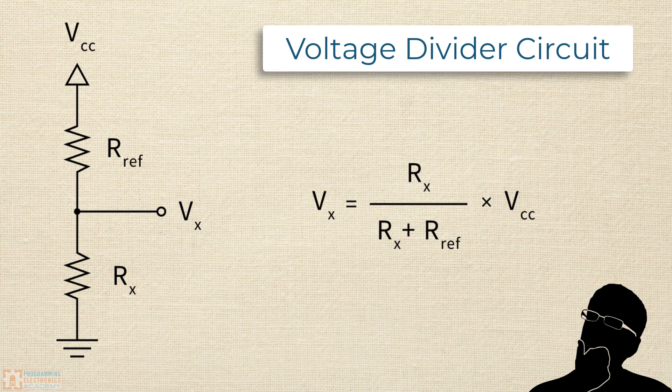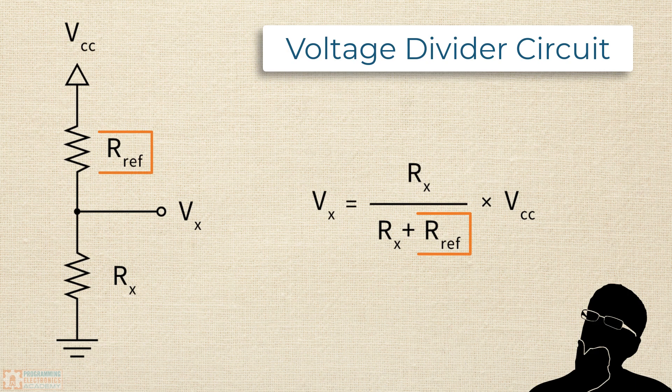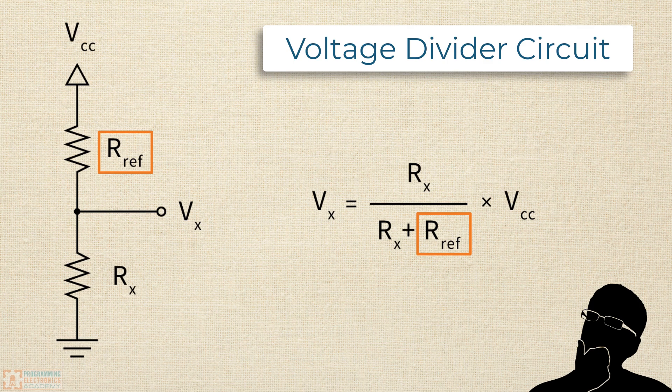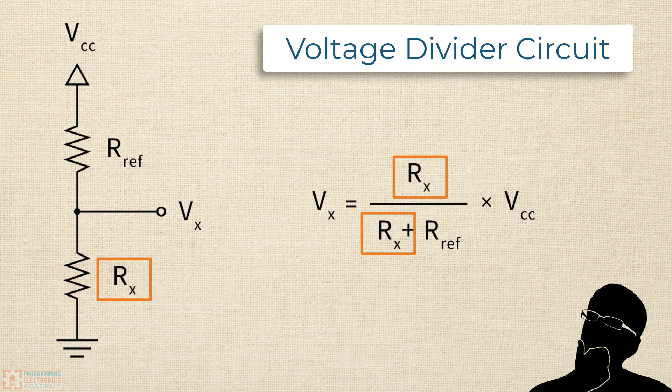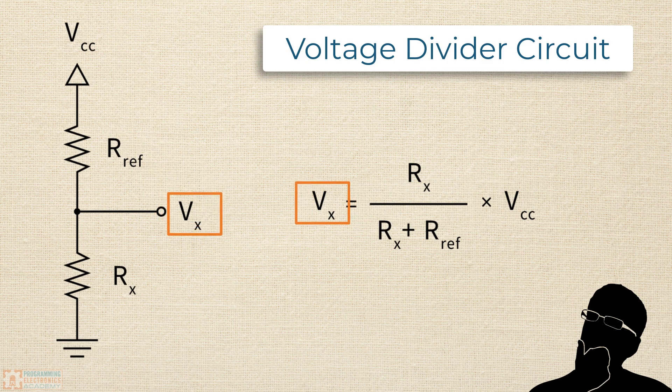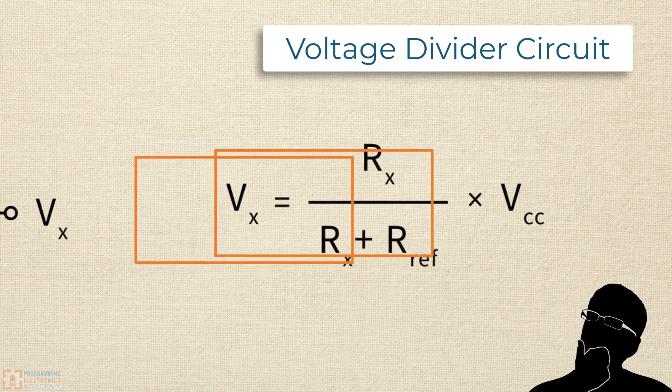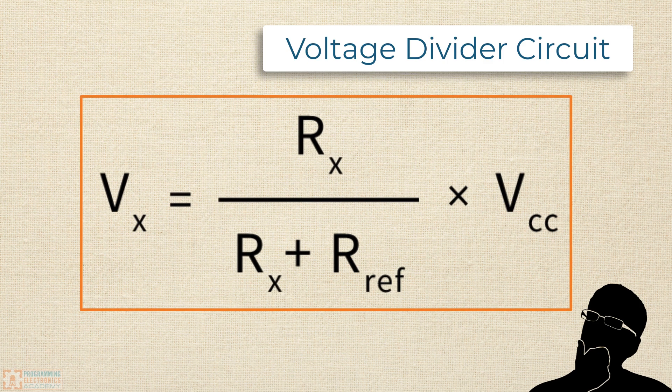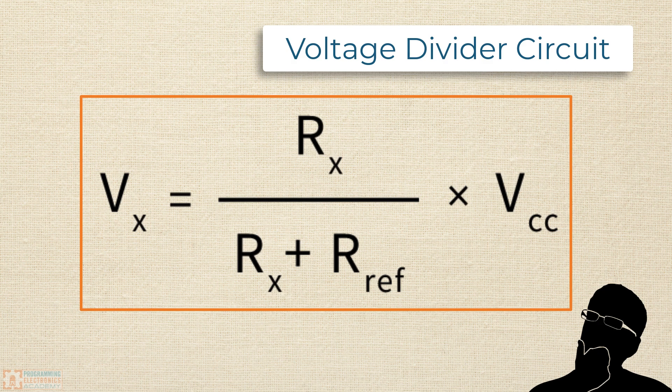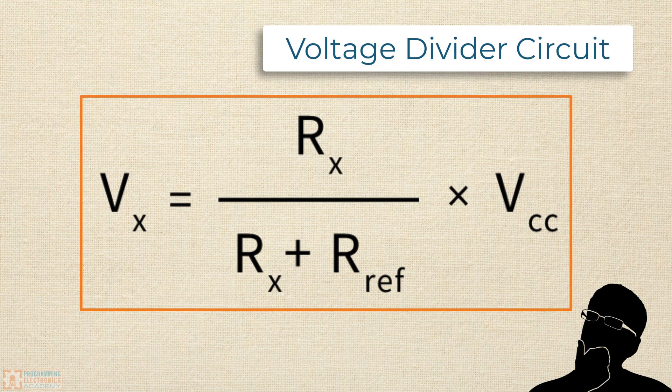Anyway, if you create a voltage divider circuit like this one, where Rref is the reference resistor whose value is known, and Rx is the resistance under test, that's like the unknown resistance that we're trying to determine, VCC is the voltage applied to the circuit, and Vx is the voltage measured at that junction, then by Ohm's law, we can create this voltage divider equation, where if we solve by Vx, that is, if we can figure out what the voltage is at Vx, then that will allow us to determine the unknown Rx resistance value.